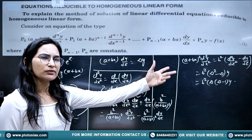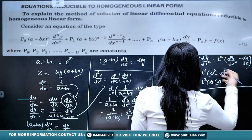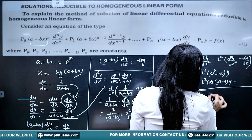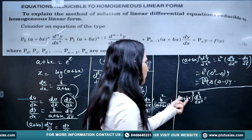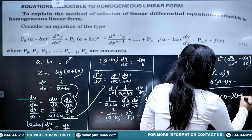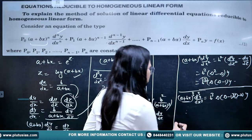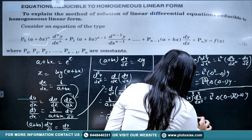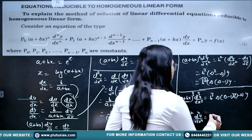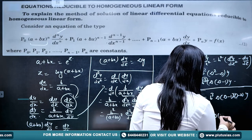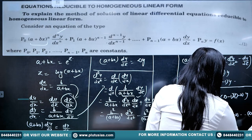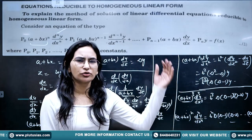Following the same pattern, (a+bx)³·(d³y/dx³) = b³·D(D−1)(D−2)y. In general, (a+bx)^n·(d^n y/dx^n) = b^n·D(D−1)(D−2)···(D−(n−1))·y. This is how you reduce these Legendre-type homogeneous equations using this formula.